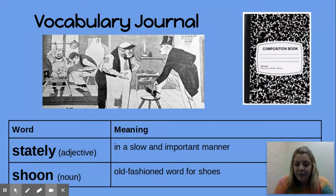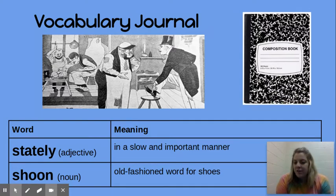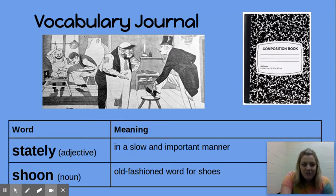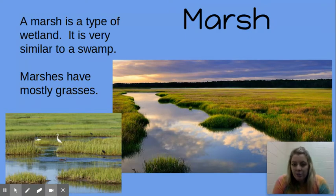Now we have vocabulary words. It says vocabulary journal, but we are not going to be keeping these in a journal — these are just words that are important for us to understand before we read our poem. We have 'stately,' which means in a slow and important manner. Then we have 'shoon,' which is a noun and is an old-fashioned word for shoes — you can see in our little cartoon here, it's an old-fashioned cobbler and a man pointing at his shoes. Then we have 'marsh.' A marsh is a type of wetland, very similar to a swamp, except that most marshes have mostly grasses.